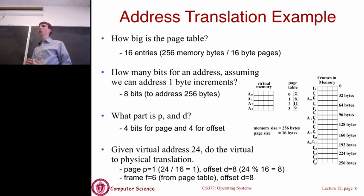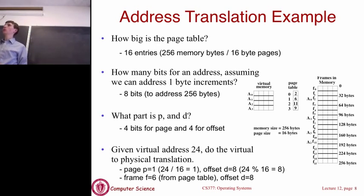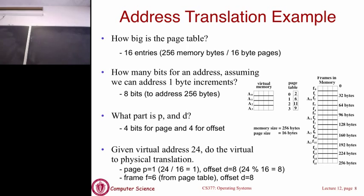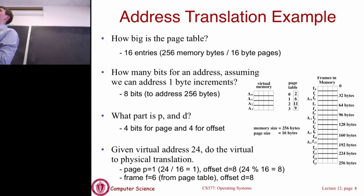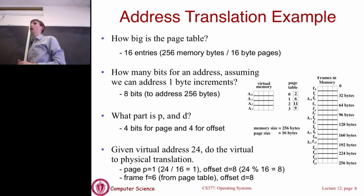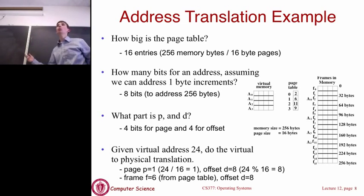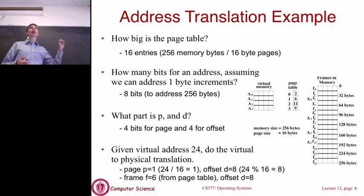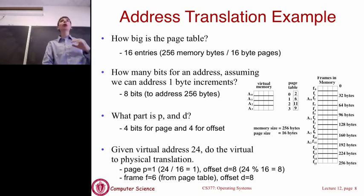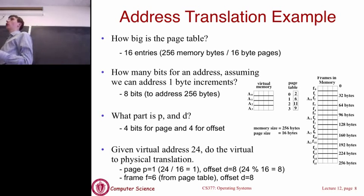A student asked how you decide what the frame numbers are — how the page table mapping is decided. That's better deferred until next class, when we'll talk about how the OS puts things into physical memory. For now, we basically assume the OS gets a page, looks for some open frame in memory, and sticks it in. Right now we're assuming every page is actually in memory somewhere.